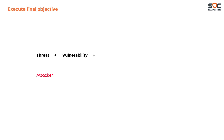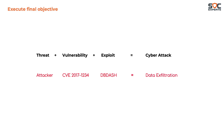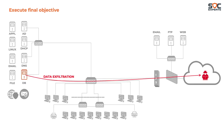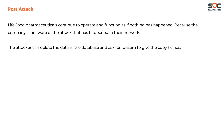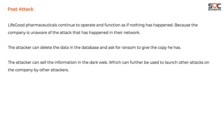Everything is now in place: the threat is the attacker, the vulnerability is CVE-2017-1234, and the exploit is db-. All these add up to a cyber attack — in this case a data exfiltration attack. The attacker spends a few more weeks slowly copying data from the database to his server on the internet, while the company has no clue they have been compromised. He can then delete the database and demand ransom, or silently sell the information on the dark web for use in other attacks.